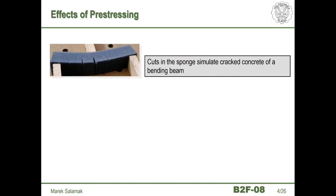Let's look at this simple experiment that you can repeat yourself. We will use a small piece of sponge. If we cut it at the bottom, we can simulate the cracks that may appear in a reinforced concrete beam. By applying a load to it, you can see that the cracks open with the beam deflection. Removing the load restores the original deflection line and closes the cracks. This happens every time a heavy vehicle enters the reinforced concrete span of the bridge.